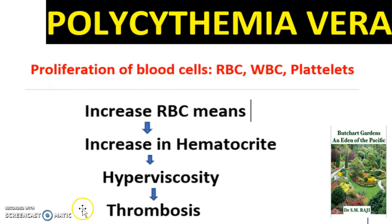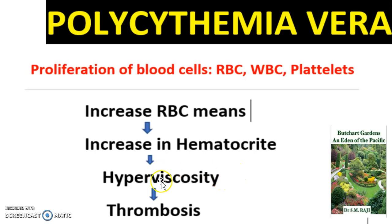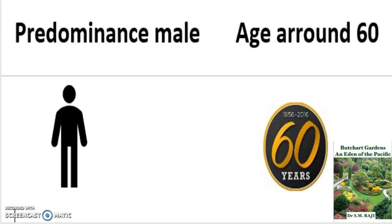When there are too many blood cells in the body, there is an increase in red blood cells, which causes an increase in hematocrit — the red blood cell count to volume ratio. That causes hyperviscosity, where the red blood cells stick together because they don't have as much space, and that leads to thrombosis, which is the process of blood clotting.